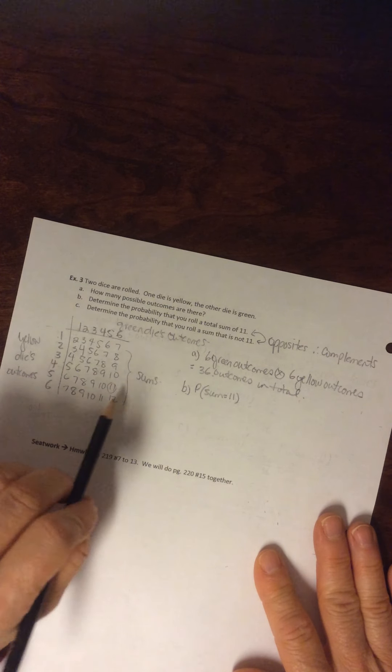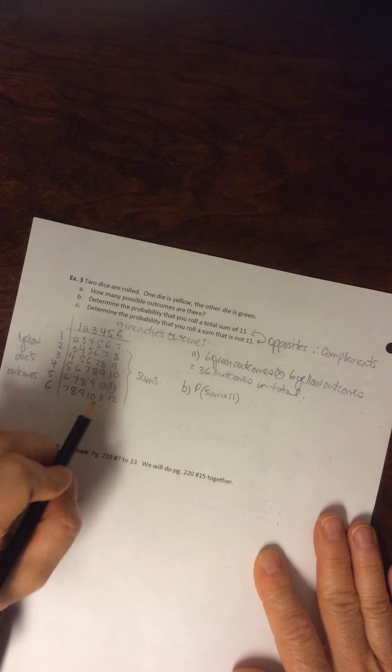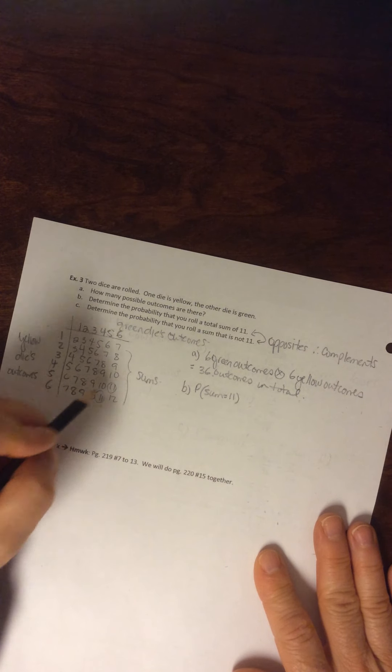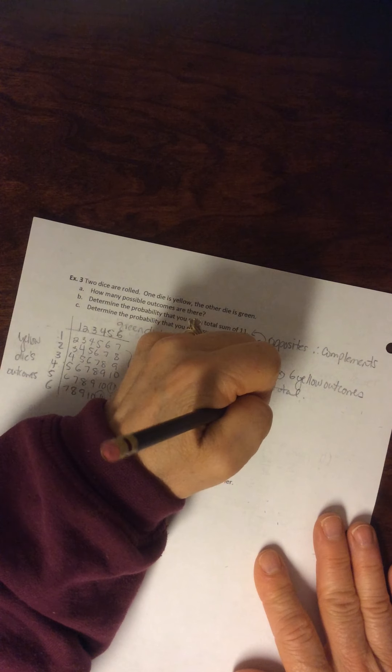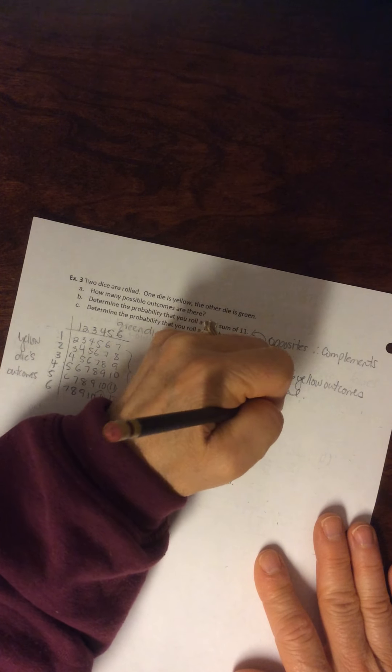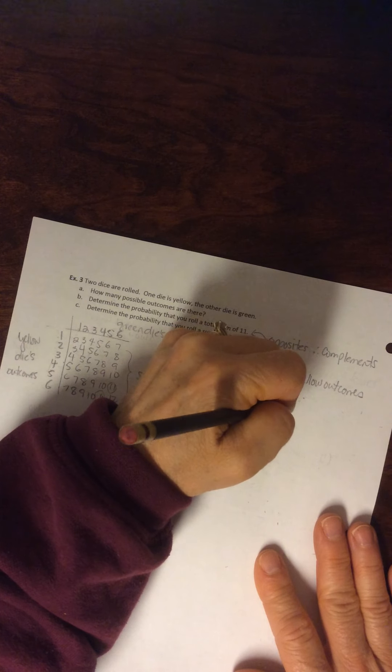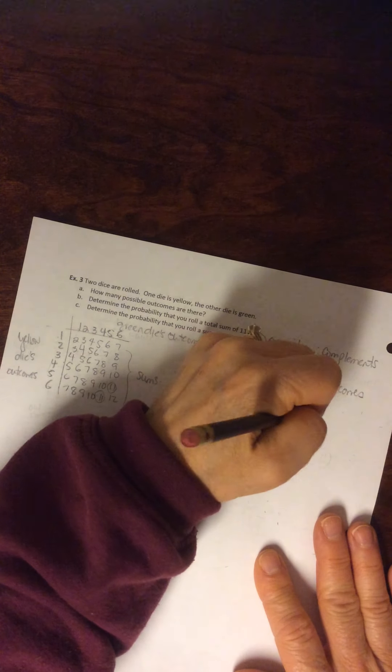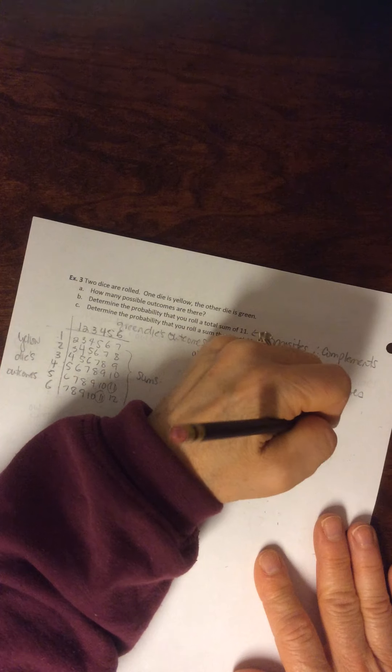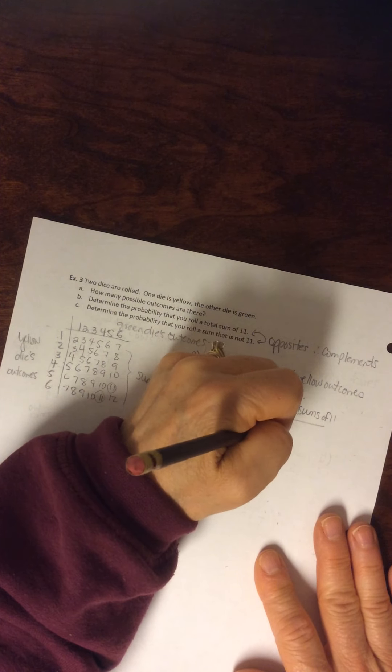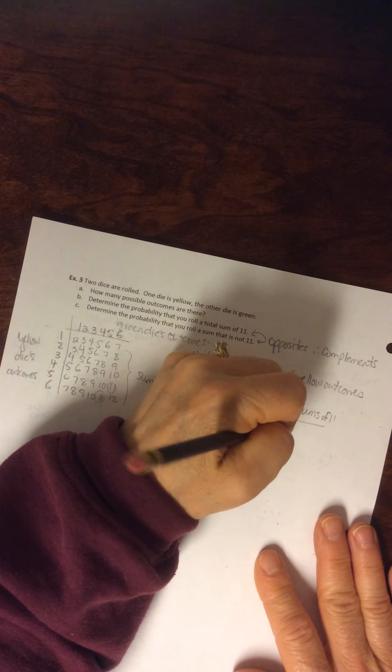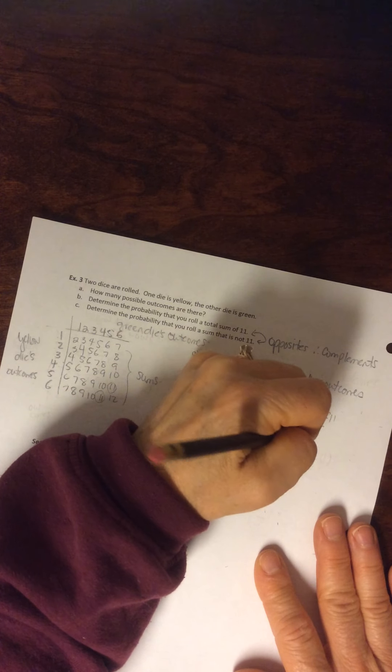The sum of 11 is here when you have a 5 and a 6, and the sum of 11 is here when you get a 6 added to a 5. So the number of times, the number of desired sums of 11 are divided by the number of total outcomes, right?